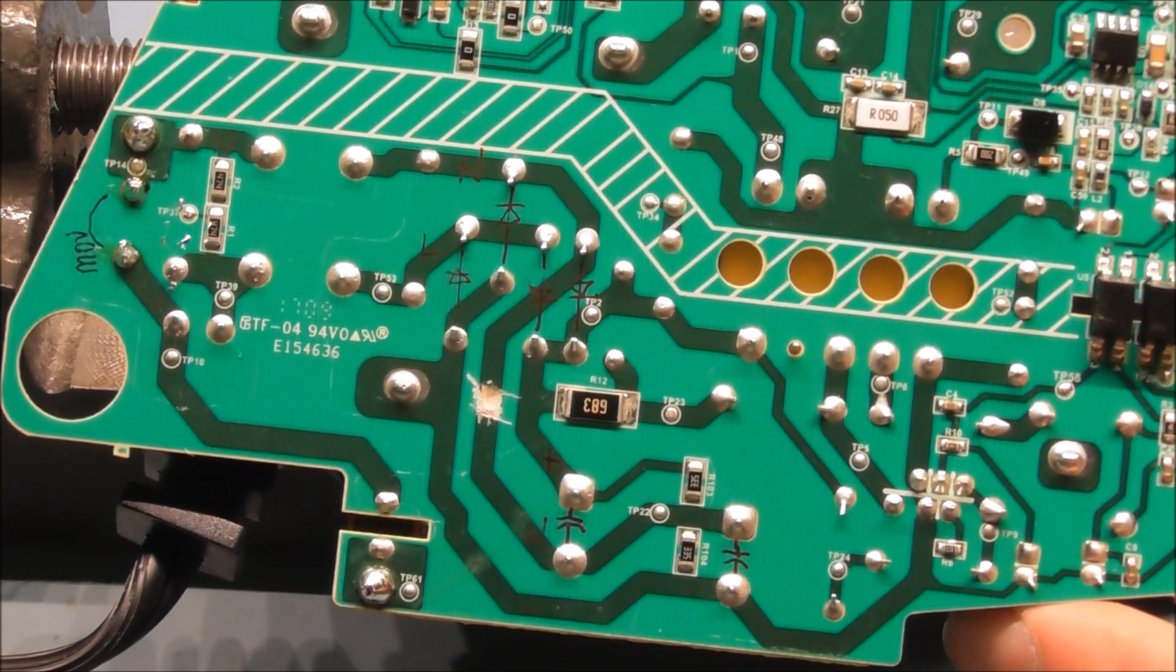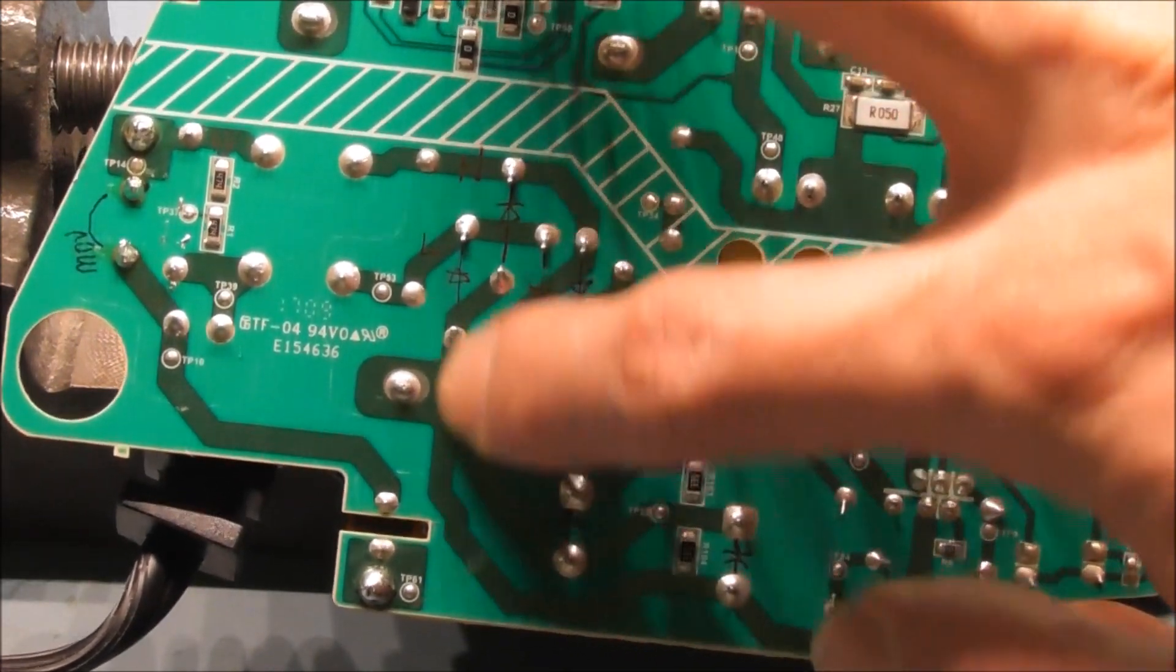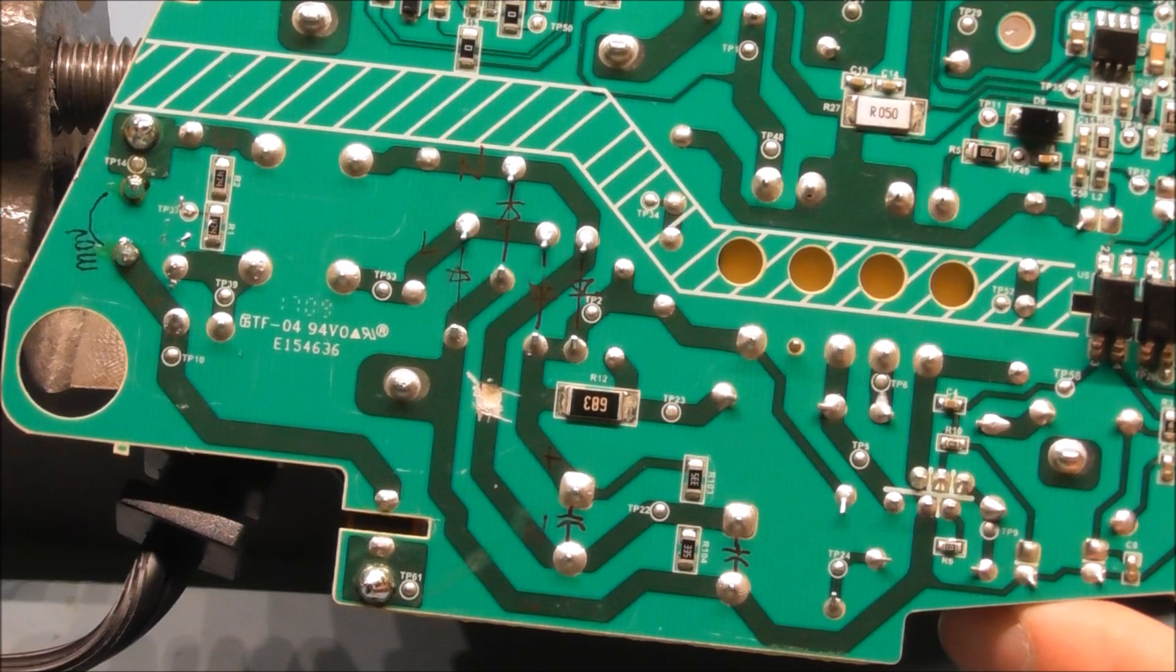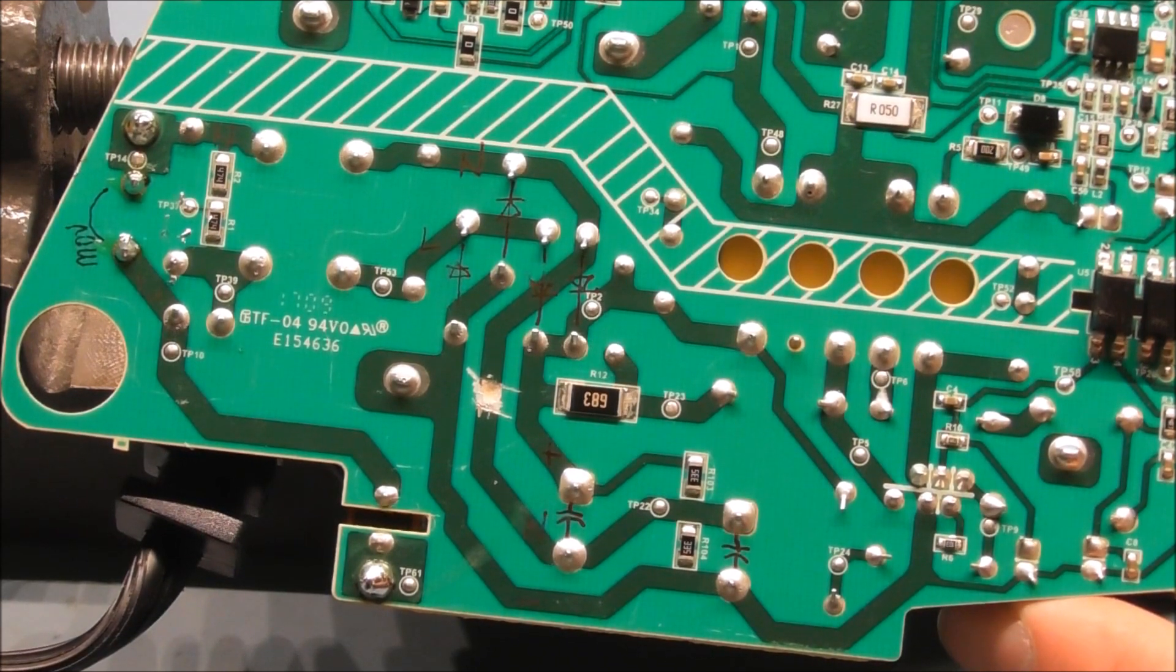So with that, our modification is mostly done, but what we're going to do is we're going to clean this up with a little bit of isopropyl alcohol, and then we will go ahead and put a piece of tape over it to make sure everything is good.